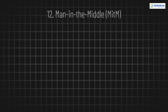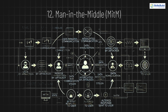12. Man-in-the-Middle. A man-in-the-middle attack happens when hackers secretly intercept communication between two parties, such as between a user and a website. They can alter the communication, steal sensitive information, or inject malicious content into the conversation.